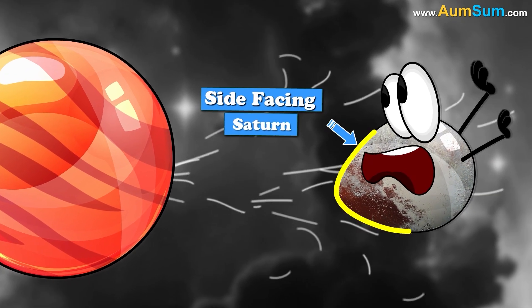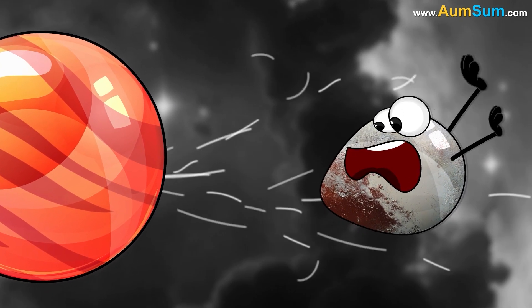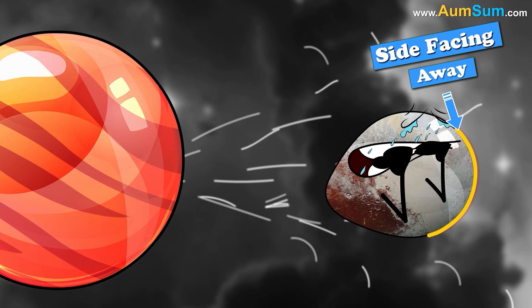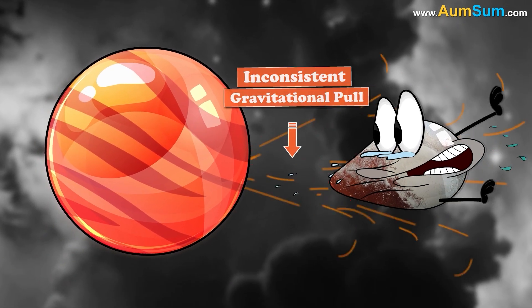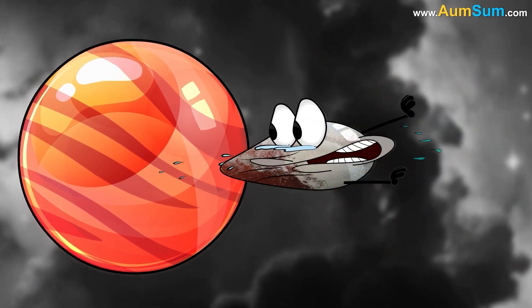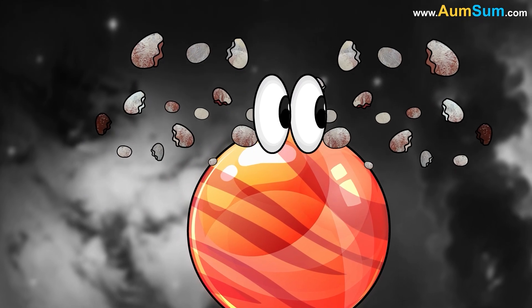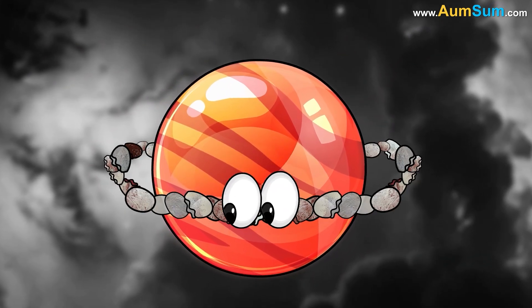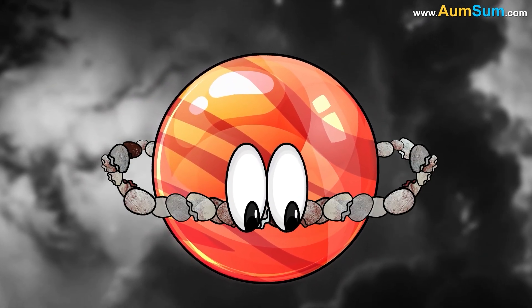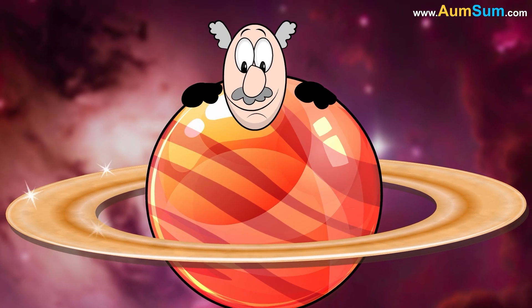Hence, the side facing Saturn was pulled more strongly as compared to the side facing away. So, this inconsistent gravitational pull may have ripped apart the celestial body into pieces. Finally, these pieces might have started revolving around Saturn, thus forming its beautiful rings.